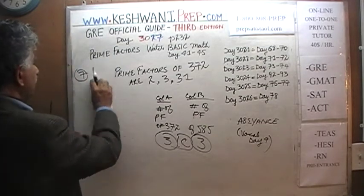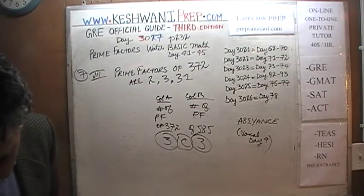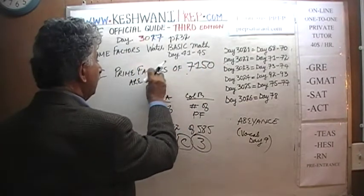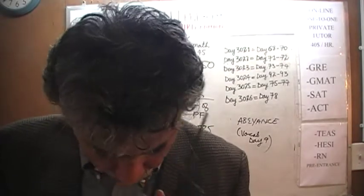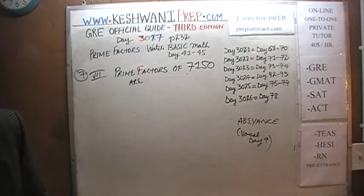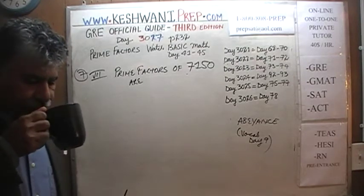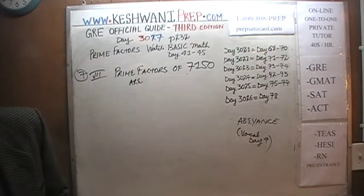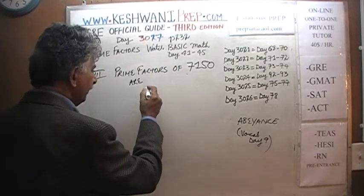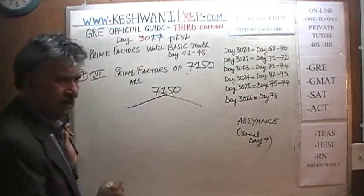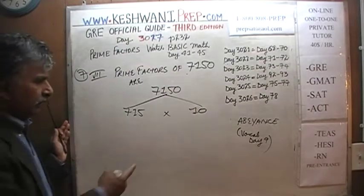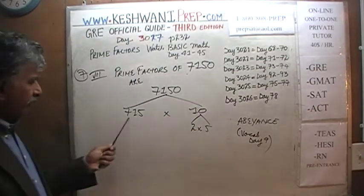Let's do number 7: 7,150. Pause the video and do it yourself. The trick here is that we're not going to keep 7,150 as is — let's break it up into 715 times 10. We know 10 only has two prime factors: 2 and 5. Now we have to find out the prime factors of 715.